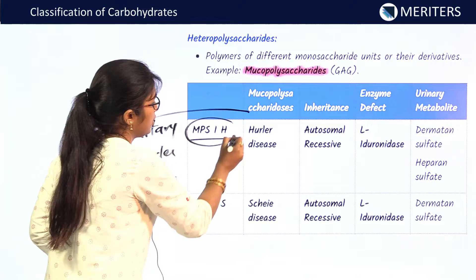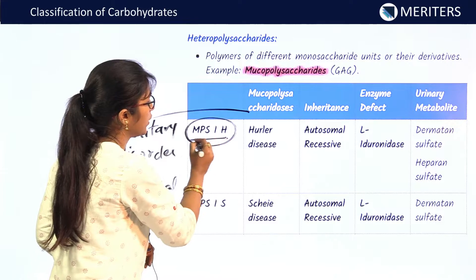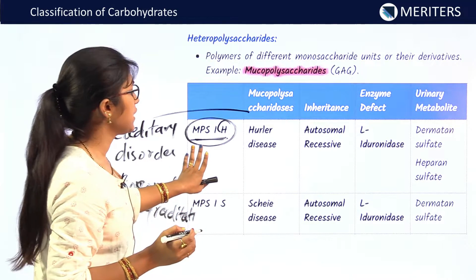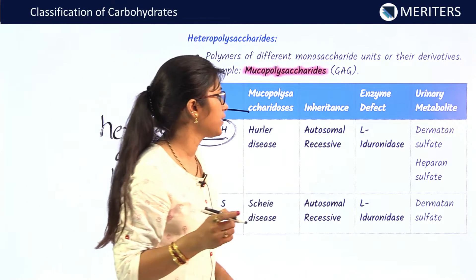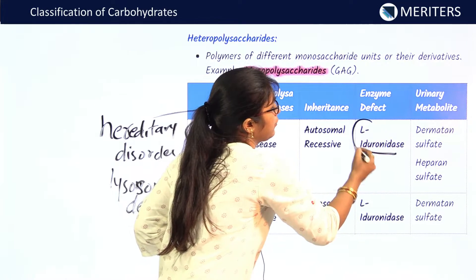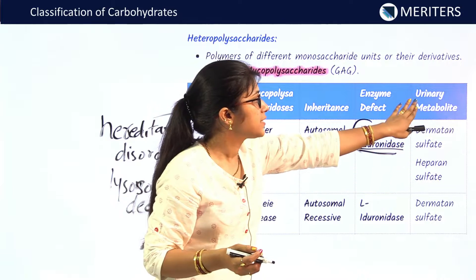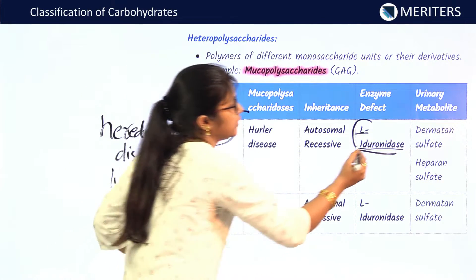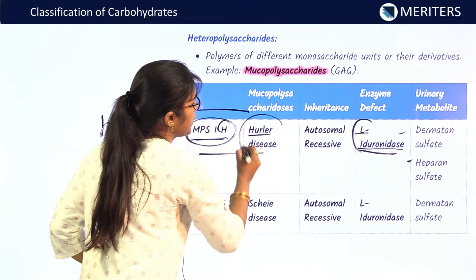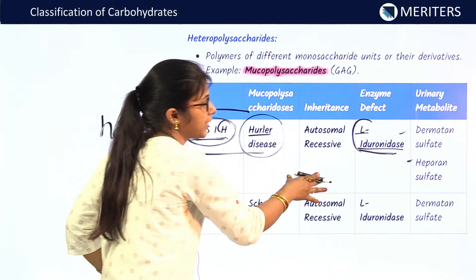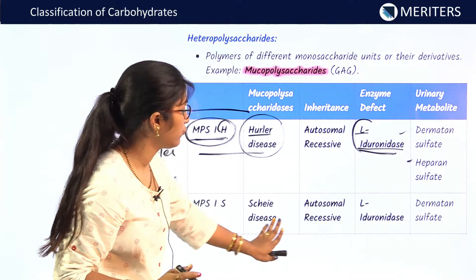MPS1H is called Hurler disease. It is autosomal recessive. The enzyme defect is L-iduronidase, and the urinary metabolites are dermatan sulfate and heparan sulfate. Go through the full table — learn the names, inheritance type, enzyme defects, and urinary metabolites, as any of these can appear as exam questions.